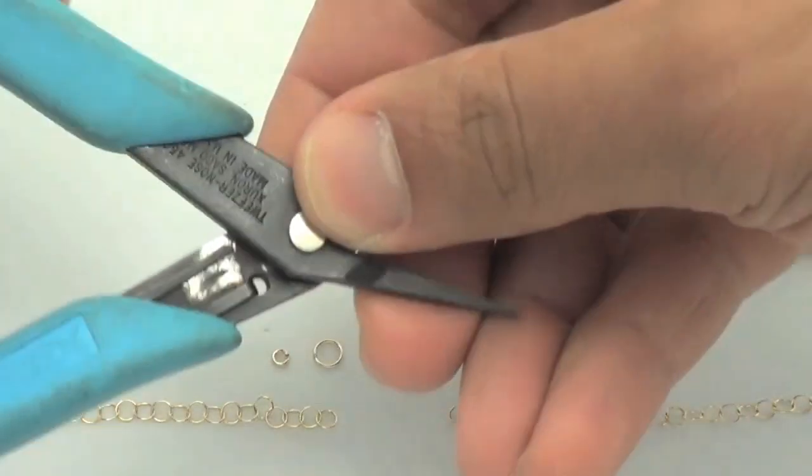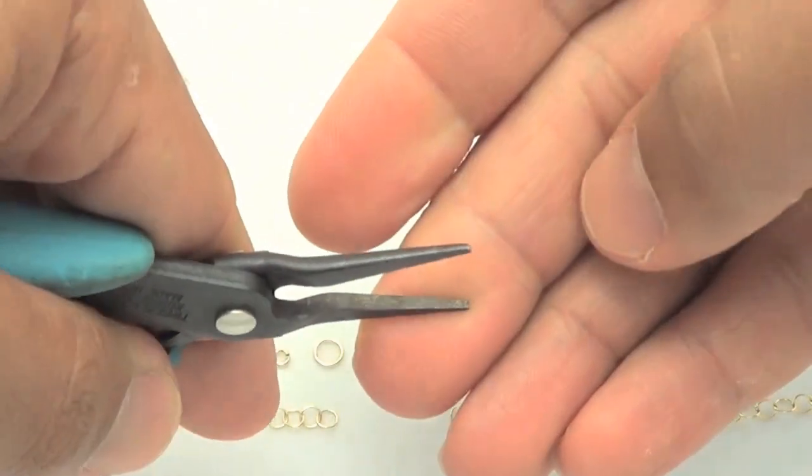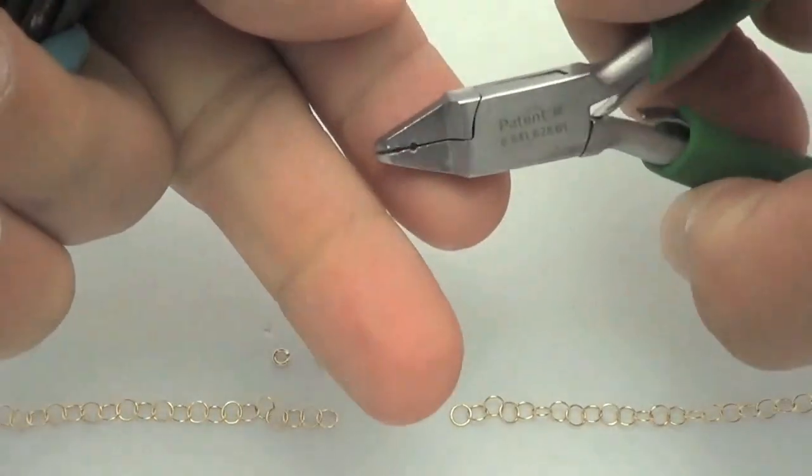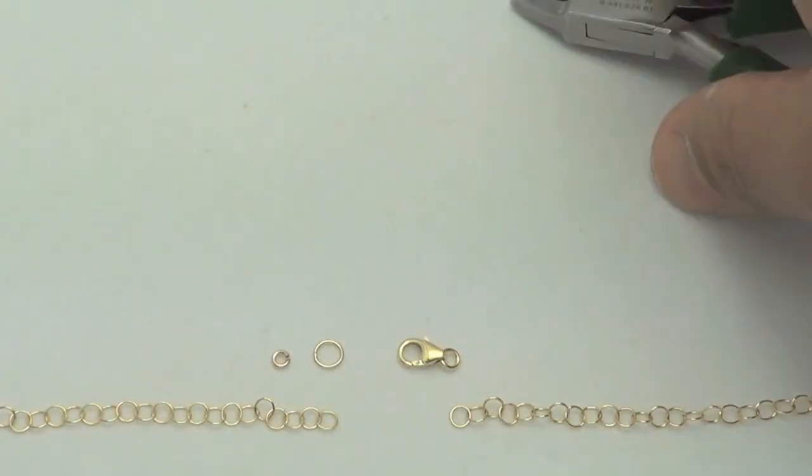Today we're going to show you how to attach a lobster clasp to a chain. The only tools you need are just two flat nose pliers. There's one and two. So let's get to it.